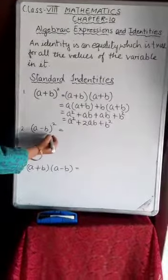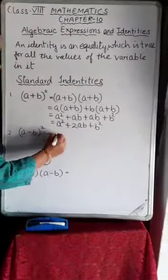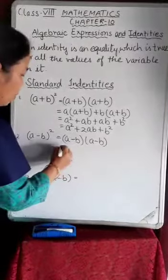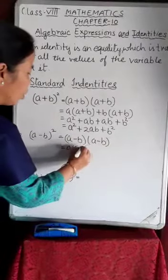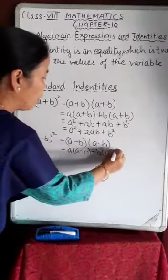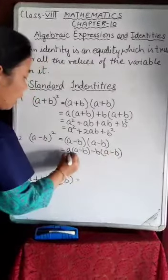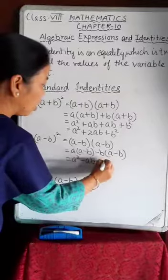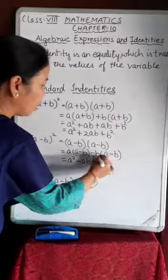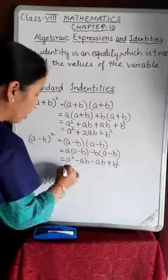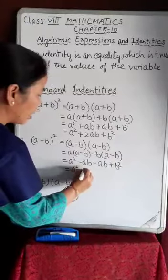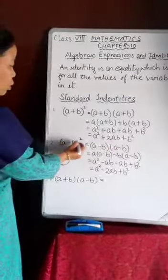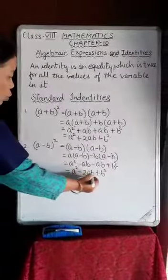The second standard identity is (a − b) whole square, written as (a − b) × (a − b). Opening the bracket: a×a = a², a×b = −ab, b×a = −ab, and minus×minus = plus, so b×b = +b². Therefore (a − b)² = a² − 2ab + b².